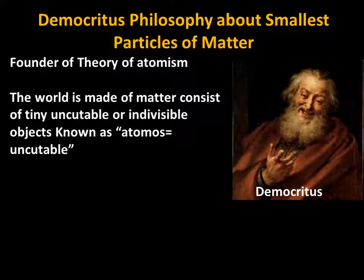If we cut matter into very small pieces, there will be a point where the matter will be indivisible or uncuttable. That point is known as the atomus. So the world consists of tiny uncuttable or indivisible objects known as atomus, or uncuttables.